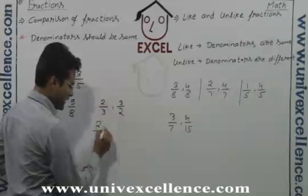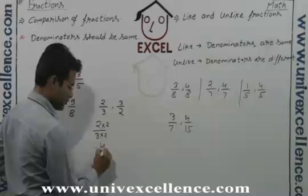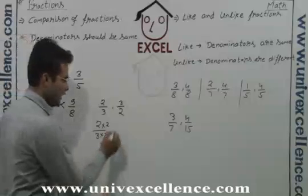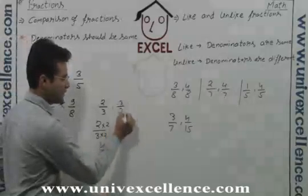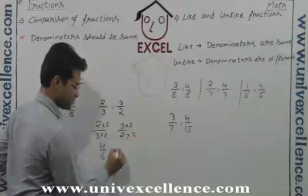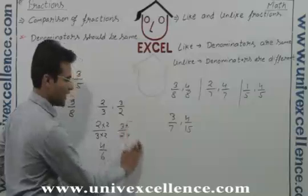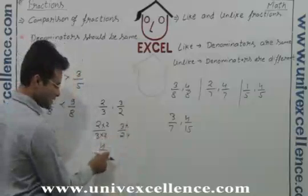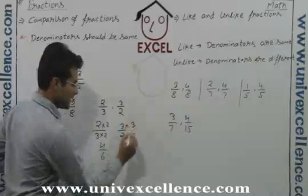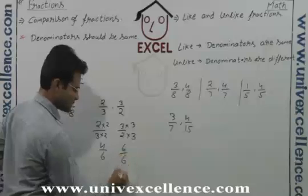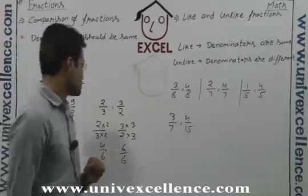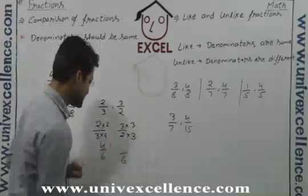We can multiply 3 by 2 so that it becomes 4 by 6, an equivalent fraction for that. And similarly, an equivalent fraction for 3 by 2 we can write down. Not by 2. Why not by 2? Because we need to make 6 at the denominator. So to make the 6, we will multiply it like this. So 6 by 6. Sorry, not 6 by 6. It is 9 by 6.